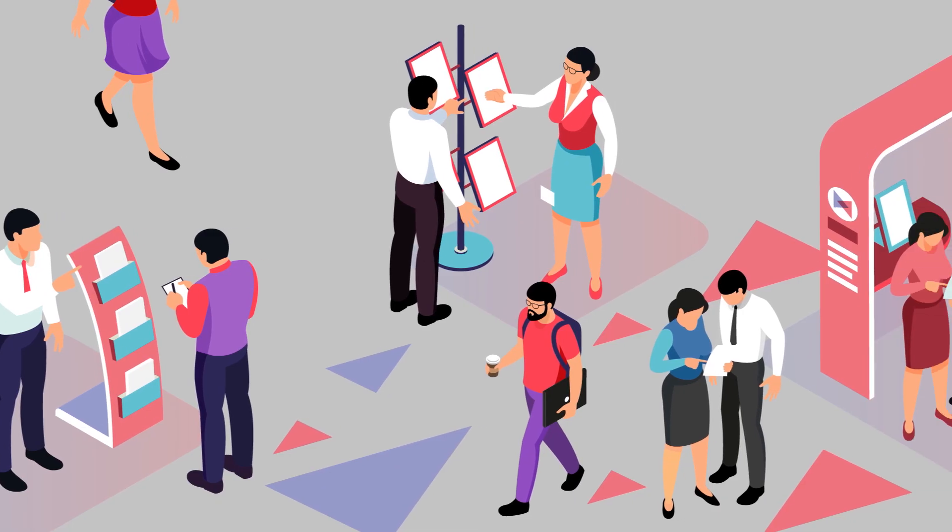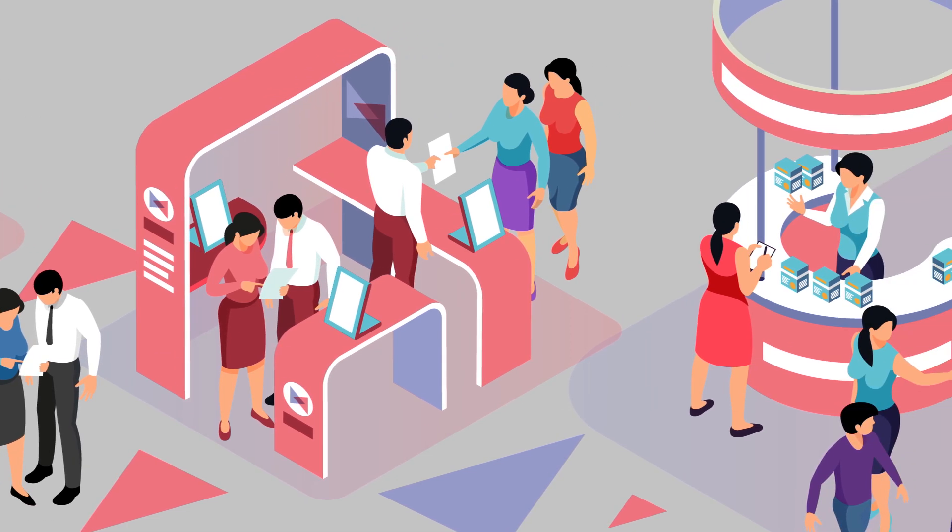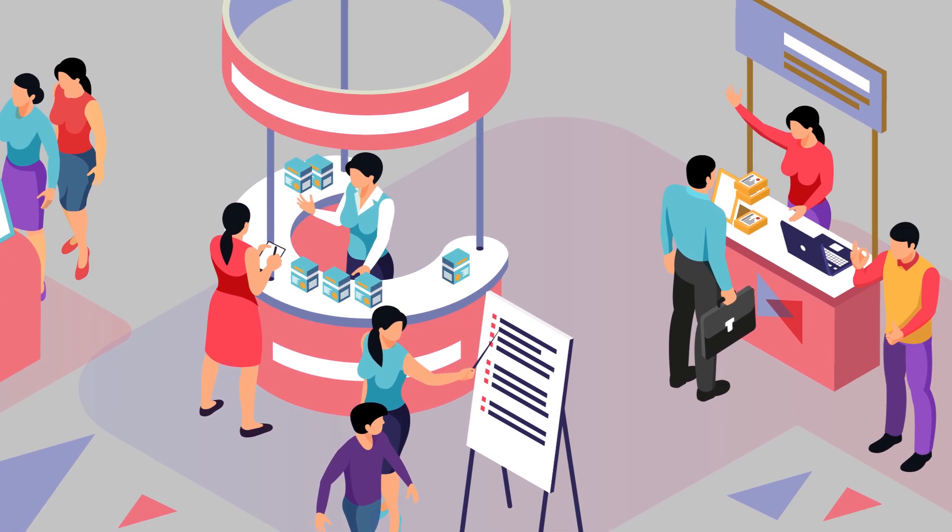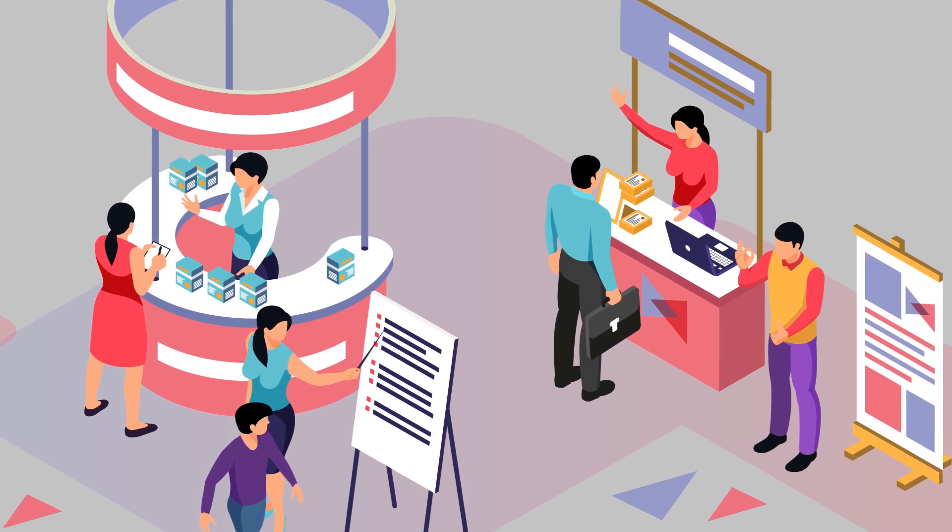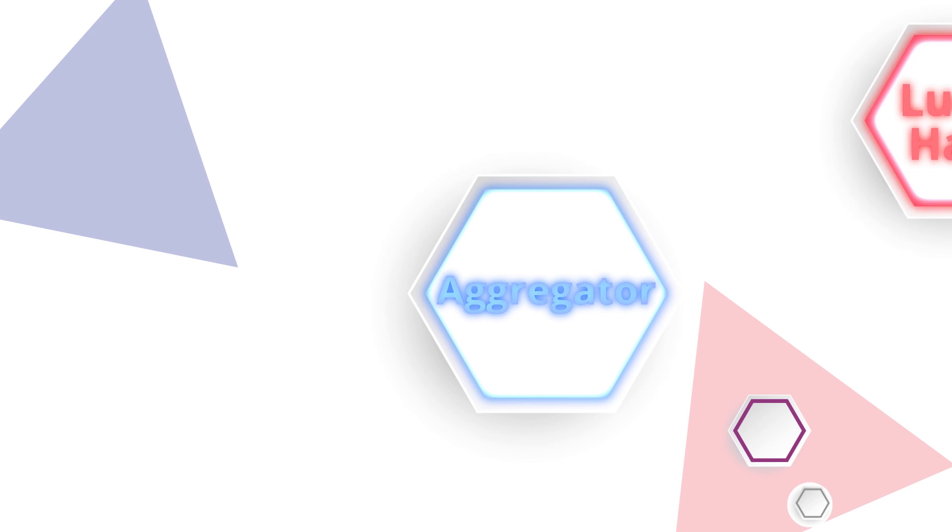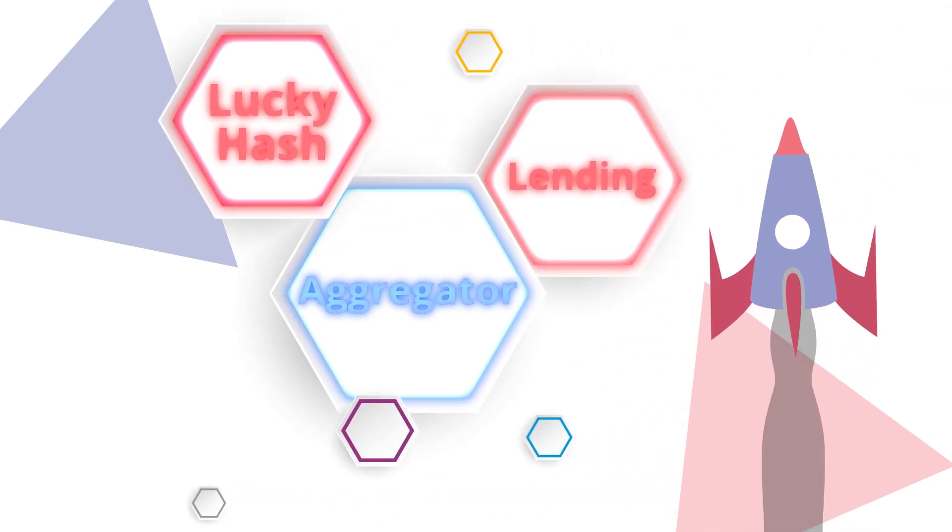Through their offline events, SocialSwap stands out strongly from the conventional crypto market. In regular meetups, everyone gets the chance to get to know the team behind SocialSwap and the community. Other exciting USPs like LuckyHash, aggregator, and lending are soon to be launched.